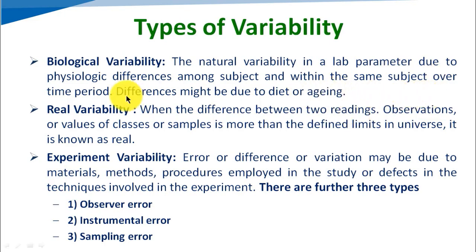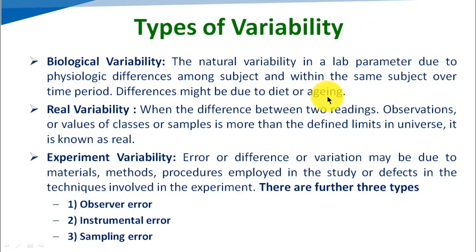For example, if we consider two persons, based on diet condition there might be a difference in weight. Another example: if we consider one person, as their age increases, more and more wrinkles appear on their skin — this is biological variability. Similarly, hair greying is also a biological variability. Person to person, there is also difference between subjects. This is about biological variability.